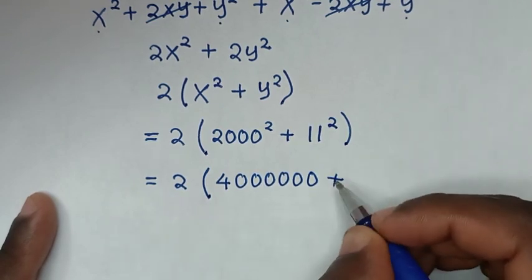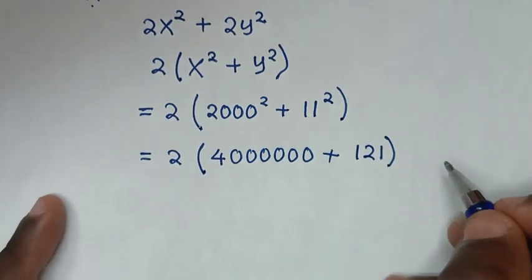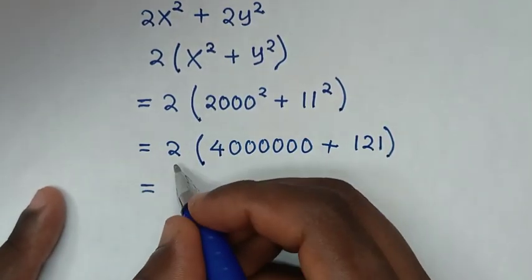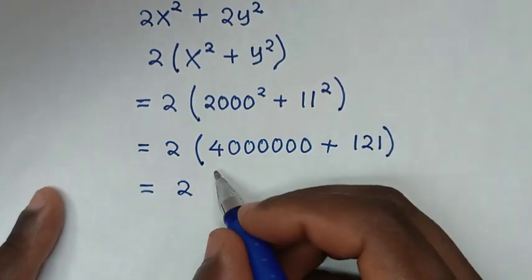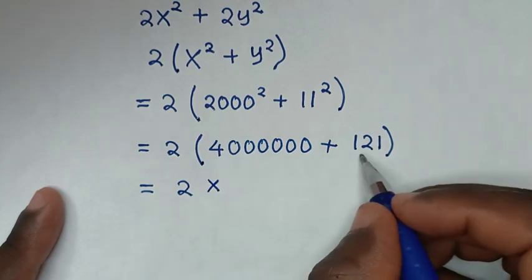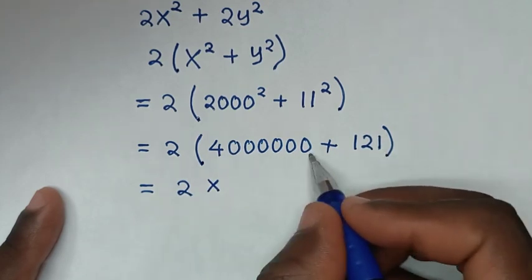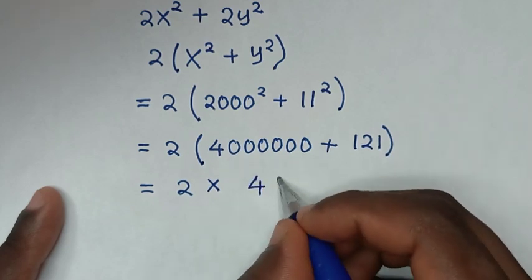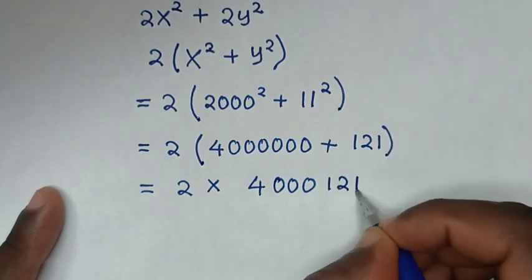This equals 2 times the sum inside the bracket. 121 plus 4 million equals 4,000,121.